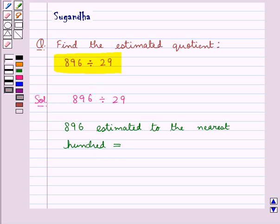now when we need to estimate a number to the nearest 100, we look at its tens digit and here the tens digit of 896 is 9. Now since it's more than 5, so we'll increase the hundreds digit by 1 and replace other digits by 0.